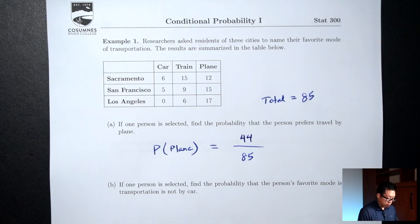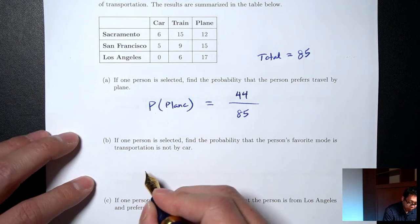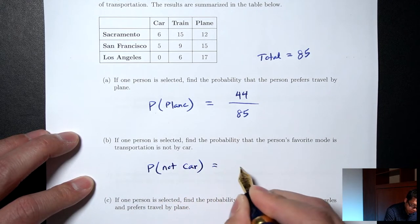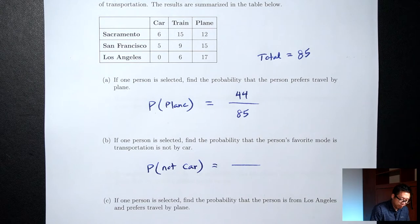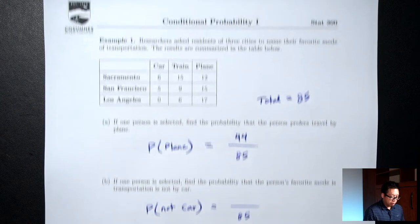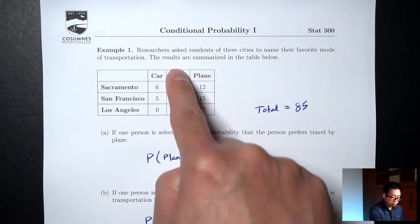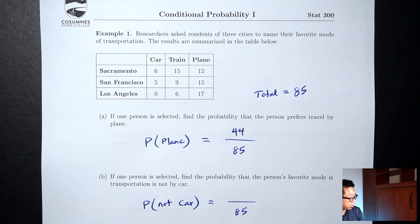Part B: if one person is selected, find the probability that the person's favorite mode of transportation is not by car. In symbols, I'm looking for P(not car). The bottom is the total number of people: 85. For the top, how many people are not car? Not car would be all the train people together with all the plane people. So 15 + 9 + 6 for train, plus 12 + 15 + 17 for plane. Together that is 74. So the probability is 74/85.